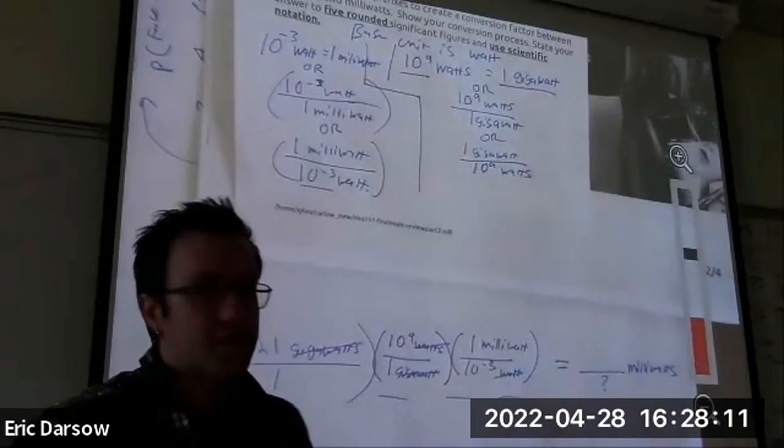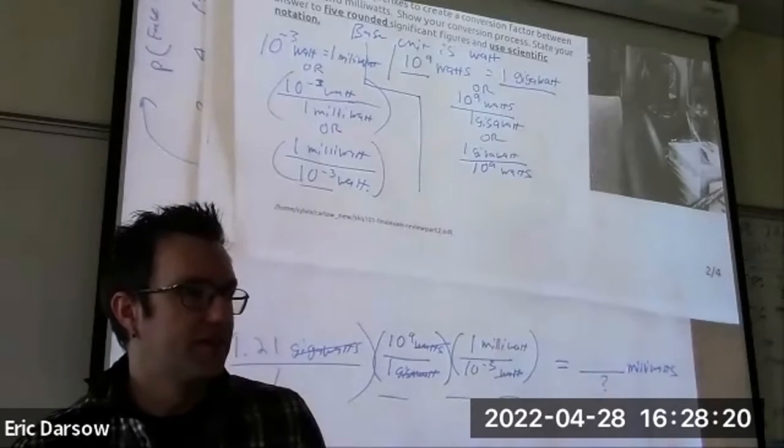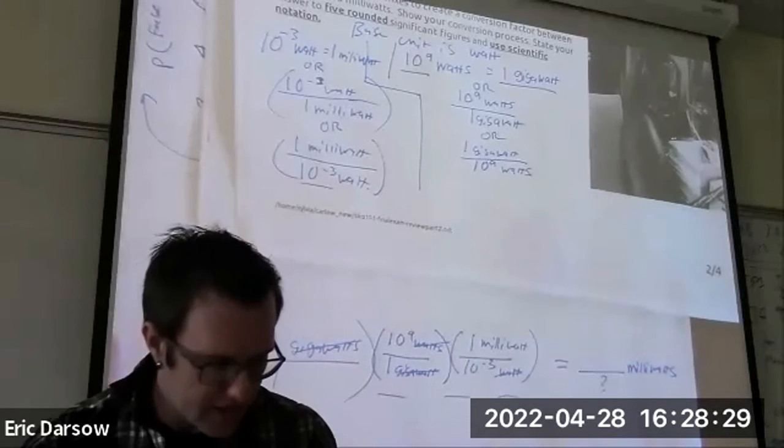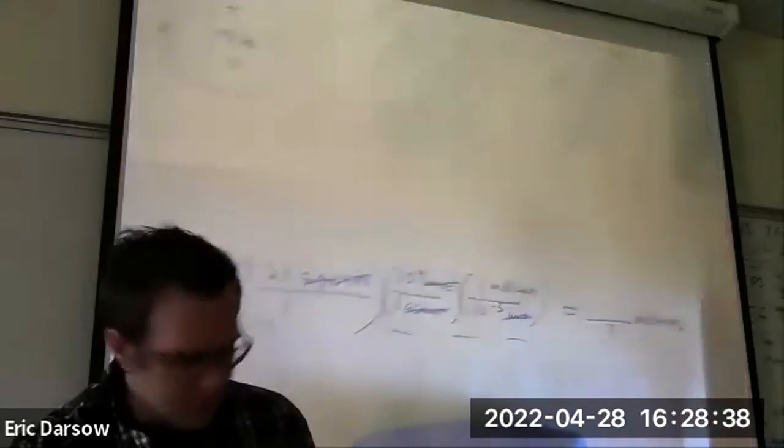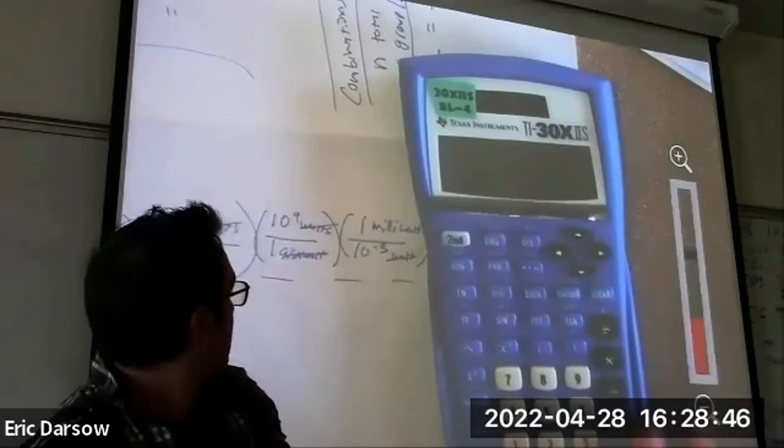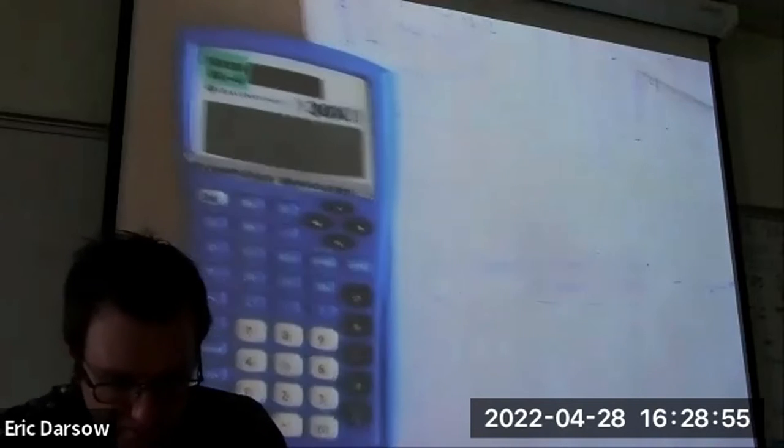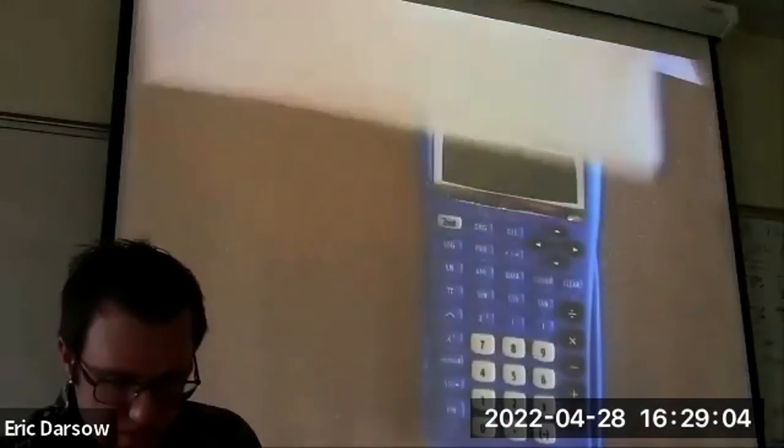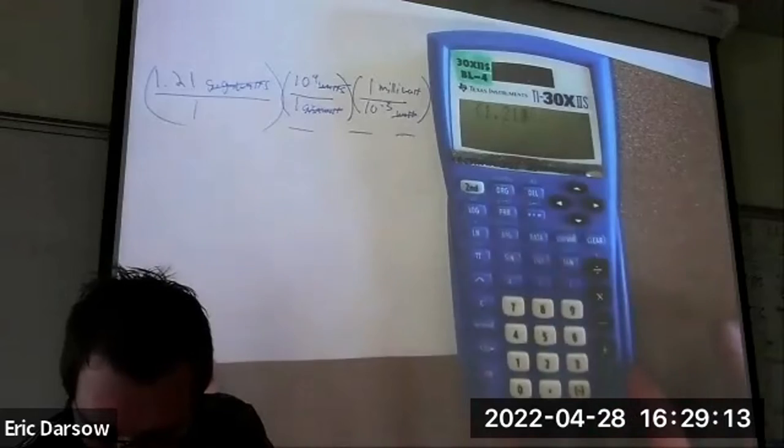I like that because we want milliwatts. Watts are going to cancel and that's going to leave us with some number of milliwatts. This was a simple one because the unit was not compound. Remember the units could be milliwatts per hour, meters per second - that's where this goes. Now you're just calculatoring. I'm going to encourage you to put them in just as they are with parentheses and division and let the calculator help you out.